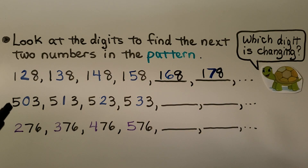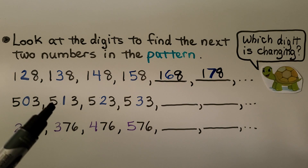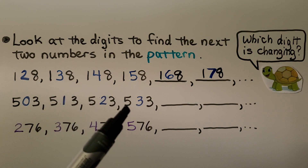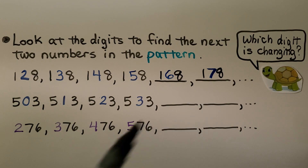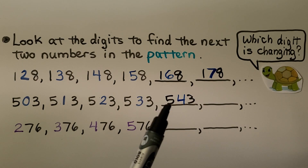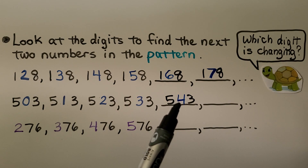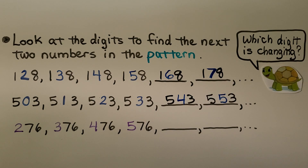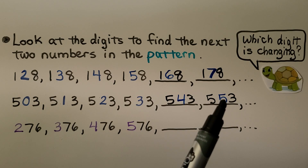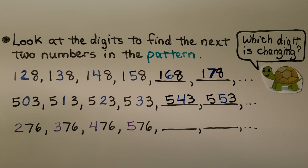In this number pattern we have 503, 513, 523, 533. The 100s and 1s are going to stay the same, and there's going to be a 4 in the 10s place. The next number will also have a 5 in the 100s place, a 3 in the 1s place, and the 10s place will go up to 5 — giving us 553. So the next two numbers in this pattern are 543 and 553.